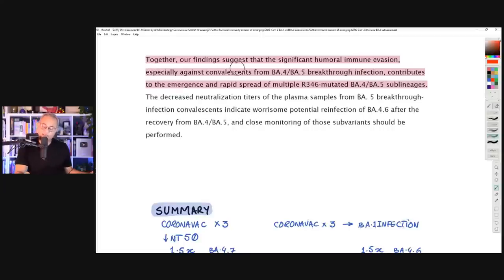That means majority of us are BA.5, that means we become open for reinfection once more. And the previous variants were actually more protective than BA.5. So that's something that is a concern for me. They say then, our findings suggest that the significant humoral immune evasion, especially against convalescence from BA.4 and BA.5 breakthrough infection, contribute to the emergence and rapid spread of multiple R346 mutation, mutated BA.4 and BA.5 sublineages.